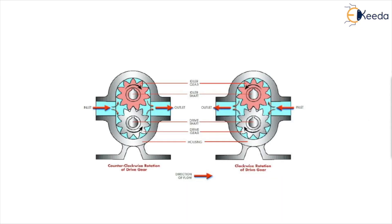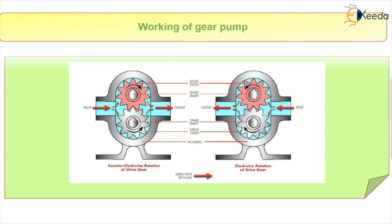Checking the rotations: if one gear is moving in the clockwise direction, the other will move in the anti-clockwise direction. If one side is the inlet, the other will be the outlet. If the upper gear is moving anti-clockwise, the lower will move clockwise and the flow will reverse. This is regarding counter-clockwise and clockwise rotation of the external gear, which also changes the inlet and outlet positions.